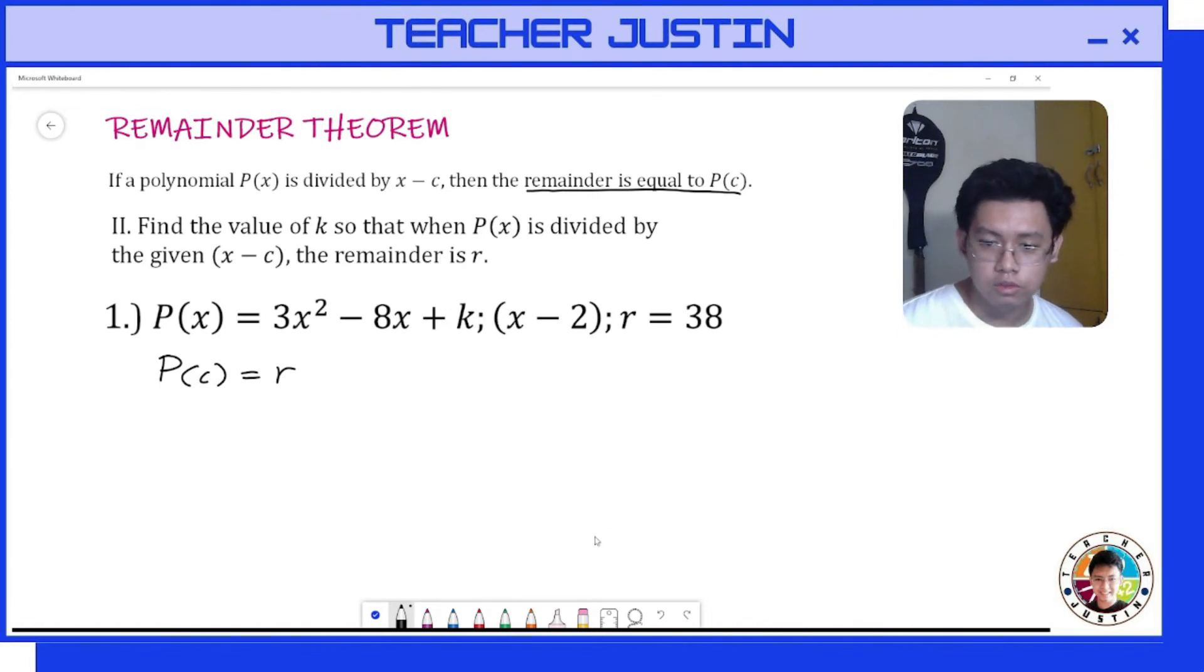Now how do we solve for the value of k? First step in our Remainder Theorem is for us to equate our binomial x - 2 to 0 and solve for the value of x. So we transpose -2 to the other side of the equation, giving us x = 2.